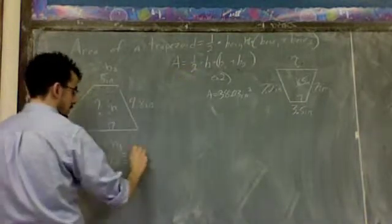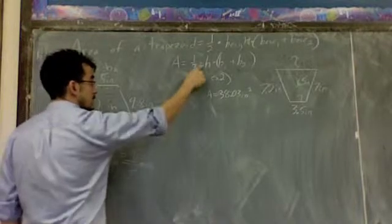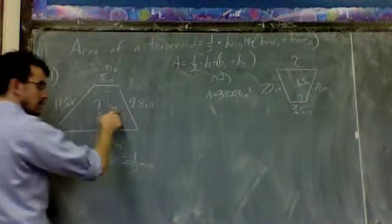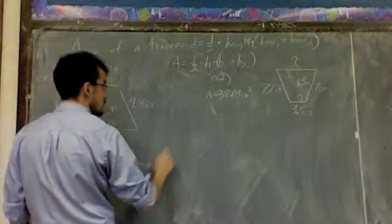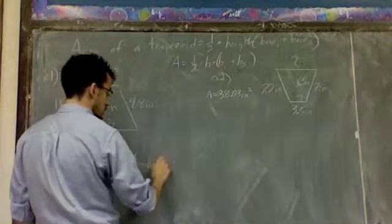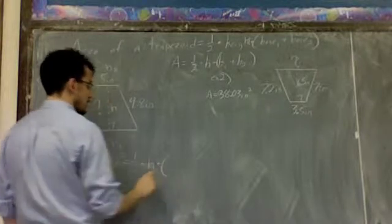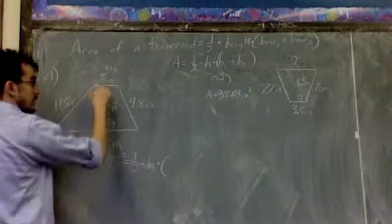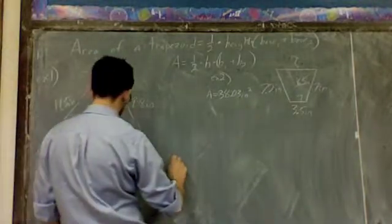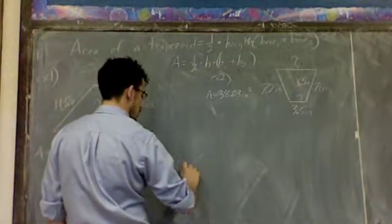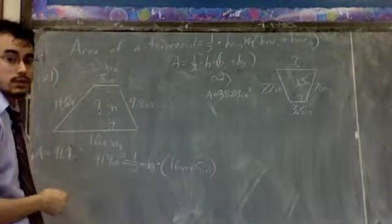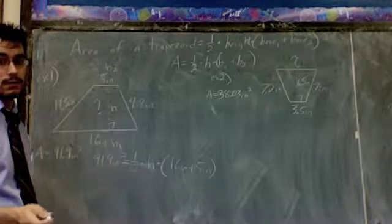Equals one half comes next, and then my times symbol. The height. Well, if I knew that number, I'd write it. But since I don't, I'm going to leave it as h. And then another times. Parenthesis. Base one plus base two. Well, base one I said was 16 inches, and base two I said was 5 inches. So 16 inches plus 5 inches. If you can write this formula, that's half the battle. It really is.